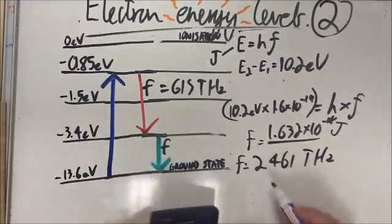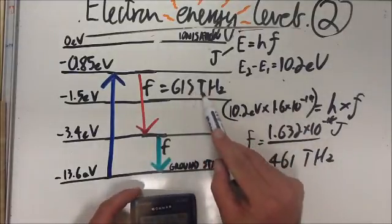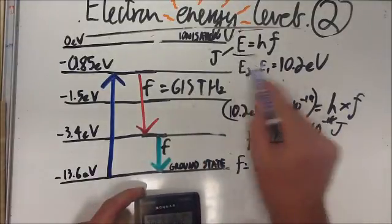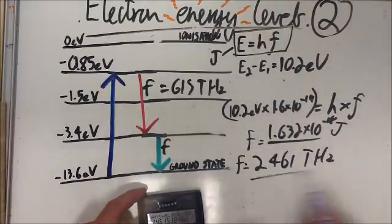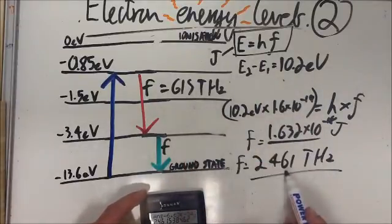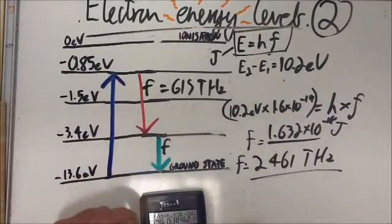Okay. So there we've used electron volts. We've also had to use the Planck's equation to work out the frequency of those two photons that are emitted. Thank you.